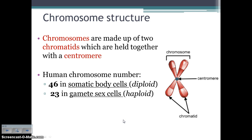Every cell in your body has 46 chromosomes — a set of 23 you got from mom and a set of 23 you got from dad. All those normal body cells are called somatic cells. They are diploid, meaning two sets of 23. There's only one type of cell in your body that is not diploid: your sex cells — eggs and sperm — called gametes. Those cells only have 23 chromosomes, so we call them haploid, meaning they have half the number. When the egg (23) and sperm (23) come together during fertilization, they restore the full 46.